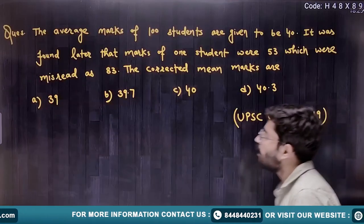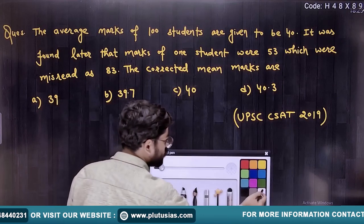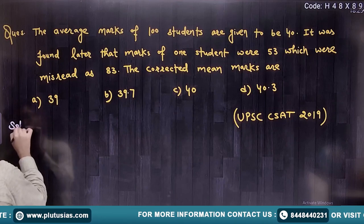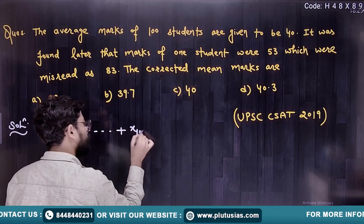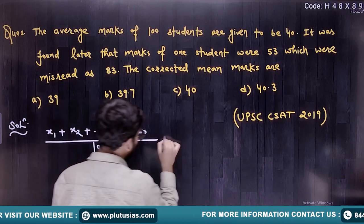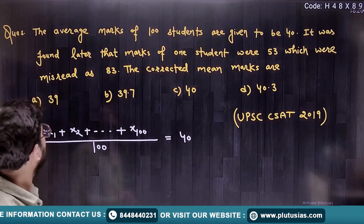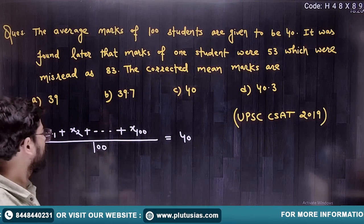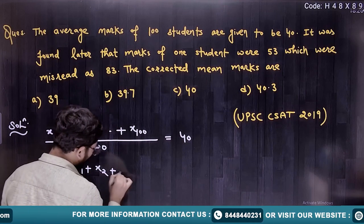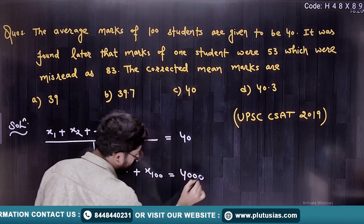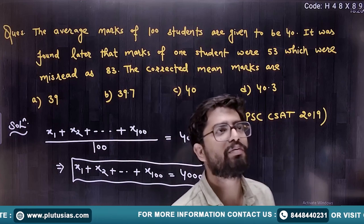In a similar manner, here is one more question based on average. The average marks of 100 students are given to be 40. So sum of marks of 100 students divided by 100 equals 40, meaning the sum of their scores is 4000.